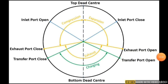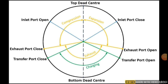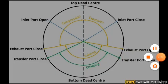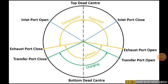The transfer port is used to allow the fresh charge in and also to scavenge the exhaust gases. These ports are used only in two-stroke engines. In a two-stroke engine, it takes one complete revolution of the crankshaft to complete the two strokes. Once you measure the crank angle with respect to the opening and closing of each port, you can draw the port timing diagram.